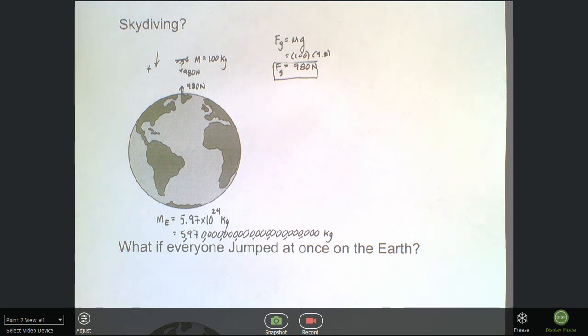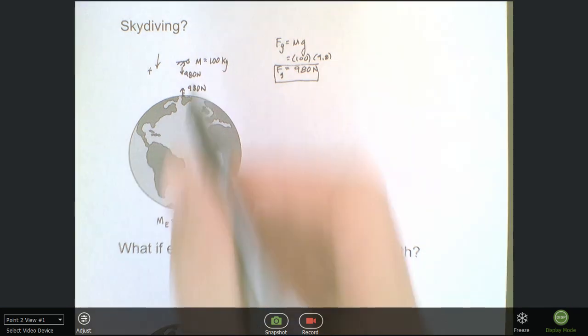But we don't say the earth's falling towards the person. We always say the person's falling towards the earth. Well, in actual fact, both are attracted to each other. But the reason why it appears that we fall towards the earth is because of the differences in the mass.